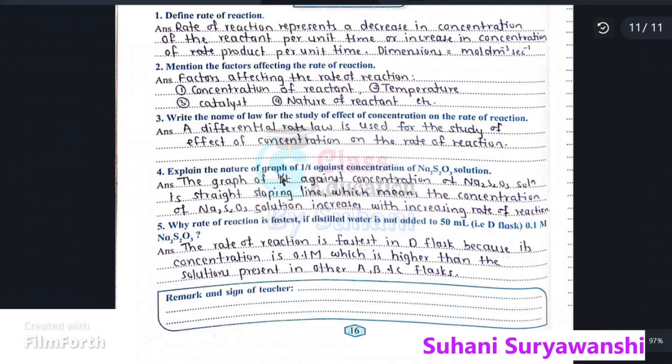Explain the nature of graph of 1 by T against concentration of Na2S2O3 solution. The graph is a straight sloping line which means the concentration of Na2S2O3 solution increases with increasing rate of reaction.